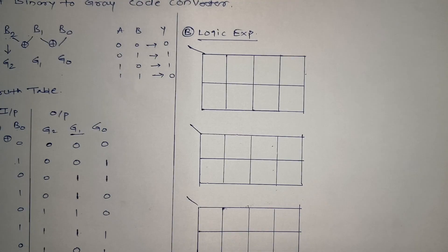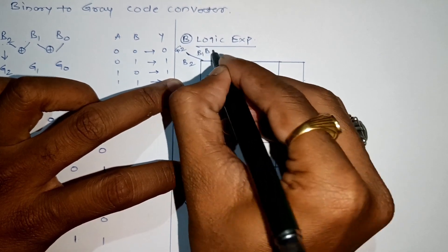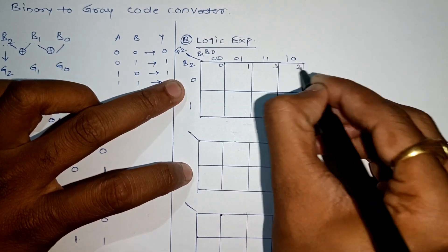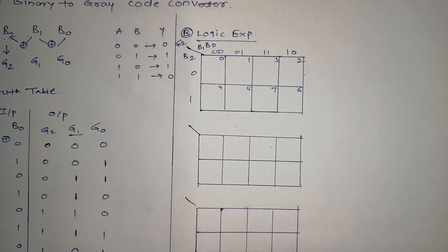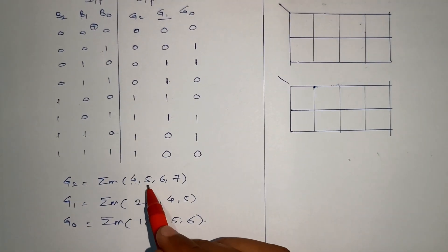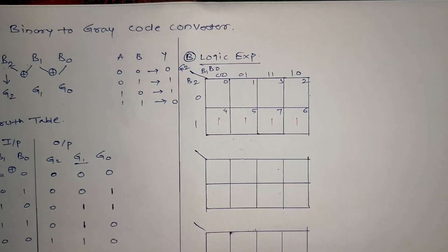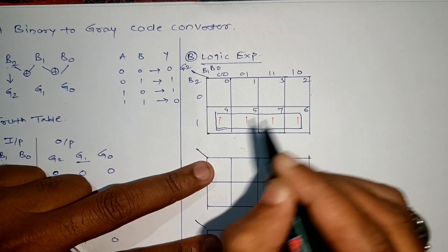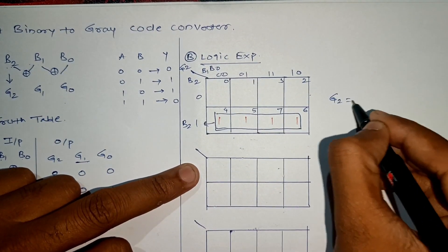Now we will use a 3-variable K-map. First we'll write for G2: B2, B1, B0. Let's assign the terms with cell numbers. G2 is 1 for 4, 5, 6, 7. Let's place 1 across 4, 5, 6, and 7.